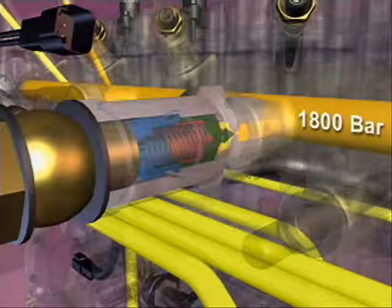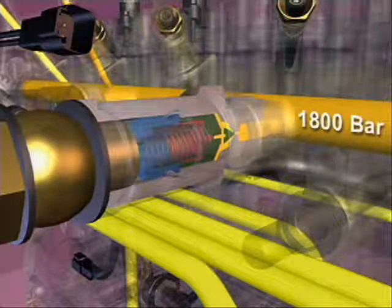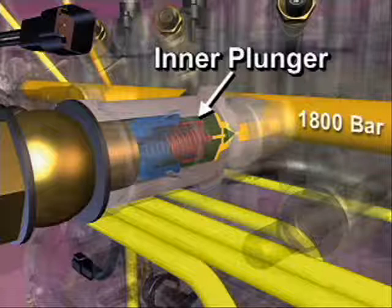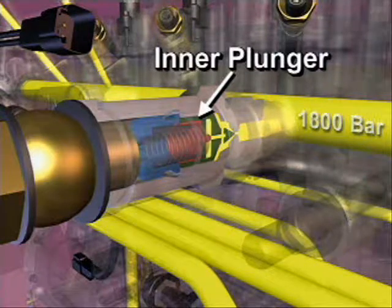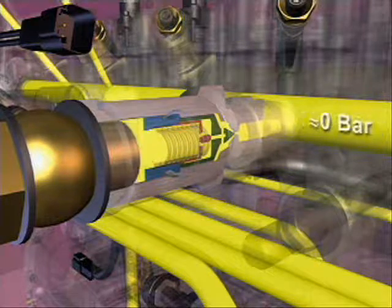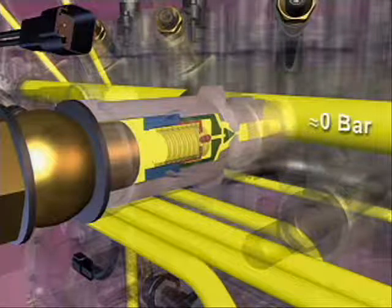Once opened, the outer plunger moves to its stop and a larger area is exposed to the high-pressure fuel. This causes the inner plunger to open and rail pressure drops to 1000 bar. After the fuel rail pressure relief valve opens, the rail pressure must approach zero to reseat and close the valve.